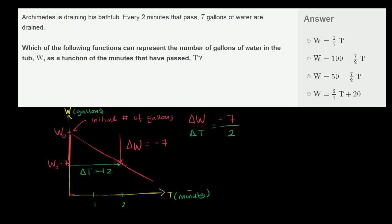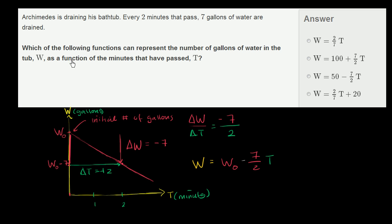So we can write a general equation: the number of gallons W equals the initial gallons W naught, plus negative seven-halves times time — or W naught minus seven over two times t. This should make complete sense: we have our vertical intercept, often called the y-intercept, and we have the slope of our line. If you're familiar with slope-intercept form, we normally write y equals mx plus b, where m is the slope and b is the y-intercept. We've written it the same way: W equals negative seven-halves t plus W naught.